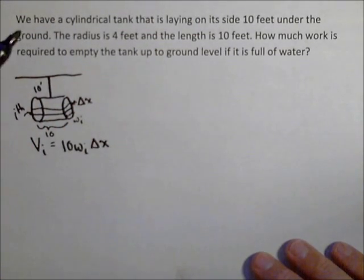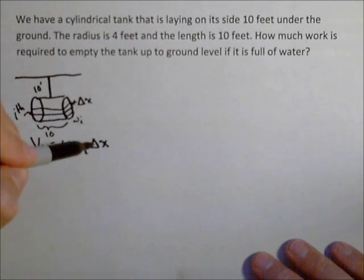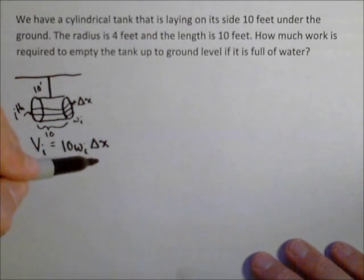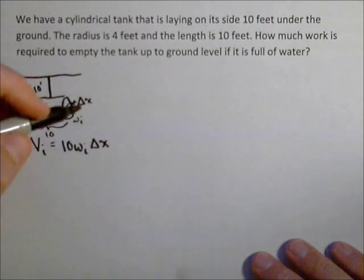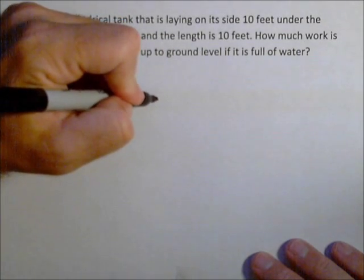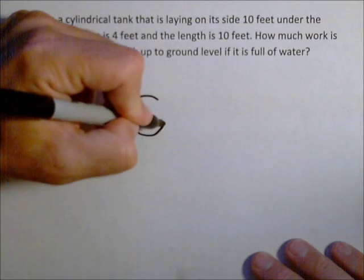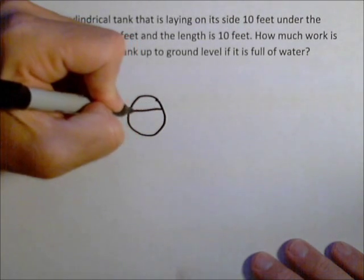Now at this point, what you should notice is we have a variable w sub i, but we're going to be integrating with respect to x. So we have to find a relationship between those two. So let's take an end view of our tank, and then I'm just going to draw a line for our slice.